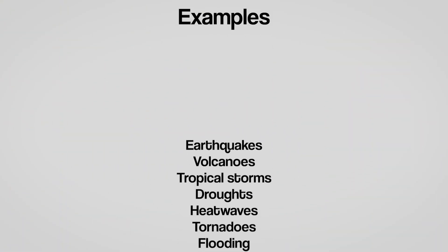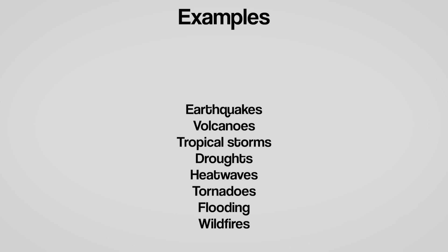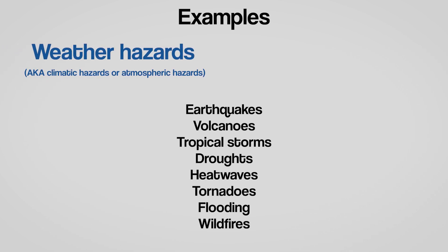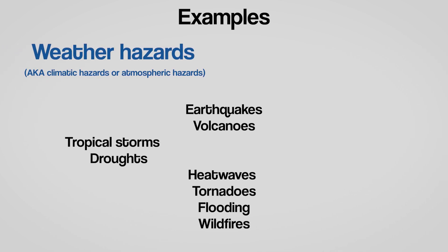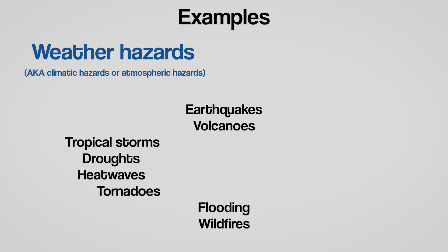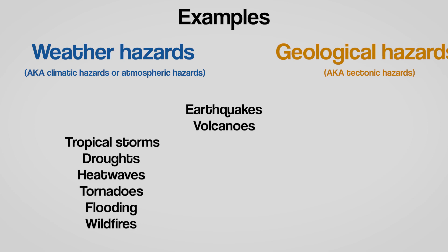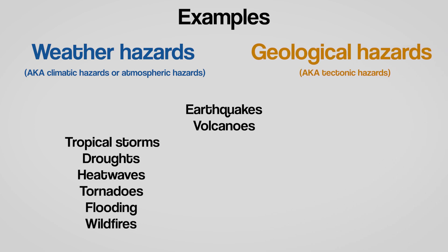We usually sort hazards into two categories. There are hazards created by the weather, known as weather hazards, climatic hazards or atmospheric hazards, and hazards created by processes taking place inside our planet. Those are called geological hazards or tectonic hazards.